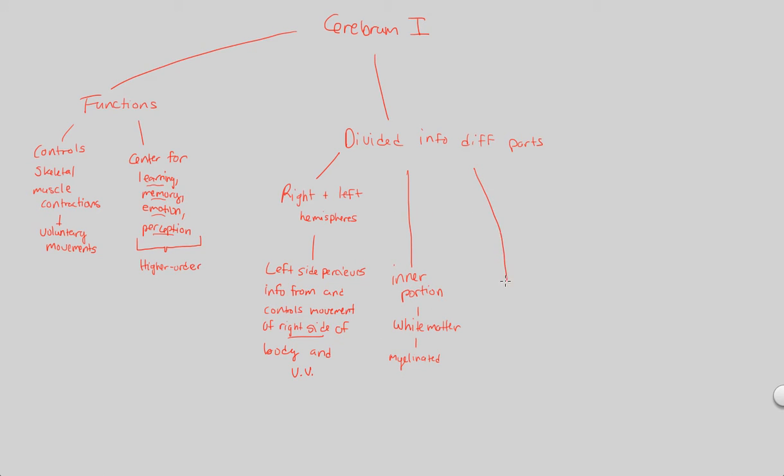Now, the outer portion of the cerebrum, that outer portion is grey matter. Much like the rest of the brain, the outside of it is grey matter. Therefore, this is going to be the portion that is unmyelinated. No myelin in here. This will continue, this will sort of subdivide itself into what we would consider the cerebral cortex.